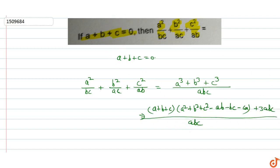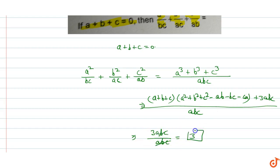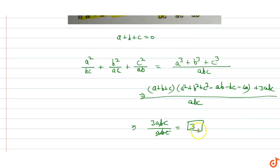Since a plus b plus c equals zero, the first term becomes zero. We are left with three times abc upon abc. The abc cancels out, giving us the value equal to three. So if a plus b plus c equals zero, then a square by bc plus b square by ac plus c square by ab equals three. This is the answer.